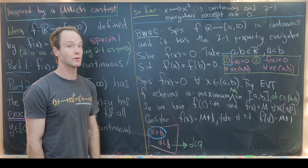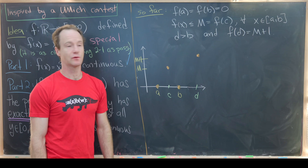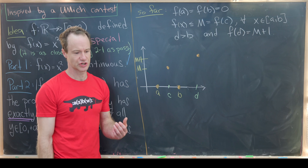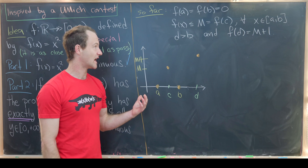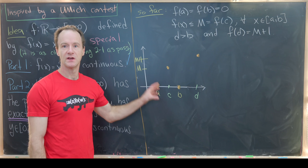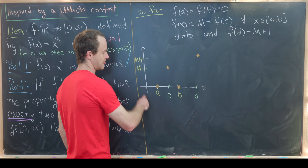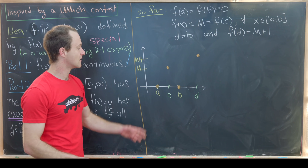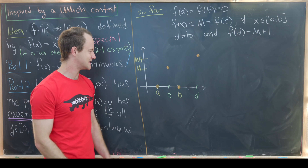To summarize: we found a and b with f(a) = f(b) = 0; the EVT gave a maximum M at c in (a, b); and we found d > b with f(d) = M + 1. Drawing the graph, f starts at zero at a, rises to M at c, returns to zero at b, then climbs to M + 1 at d, giving us a picture of four key points.